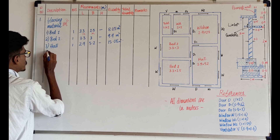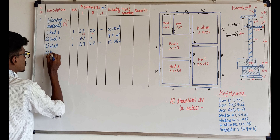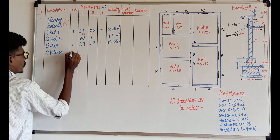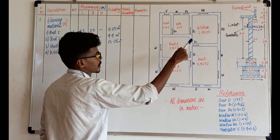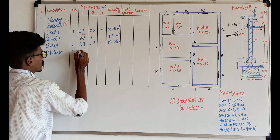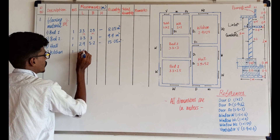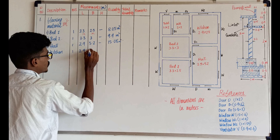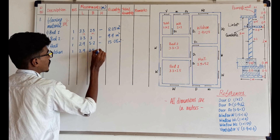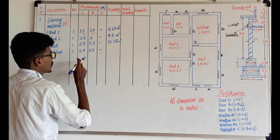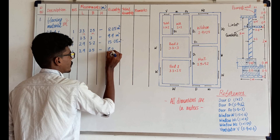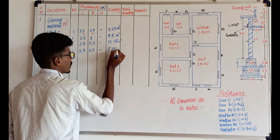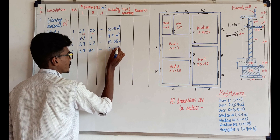Fourth one: Kitchen. Dimension 2.9 x 2.5. Height: blank. 2.9 x 2.5 is equal to 7.25 m². Answer.